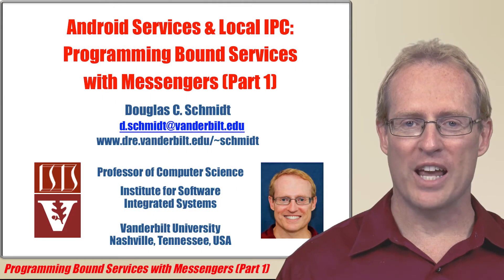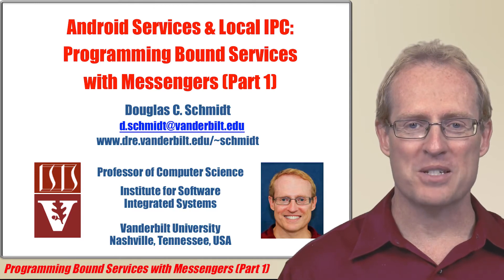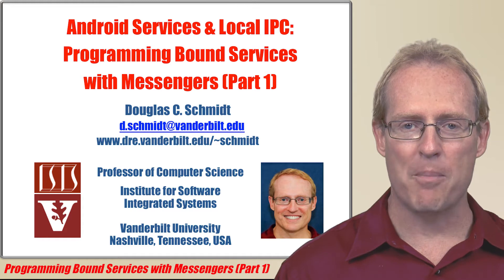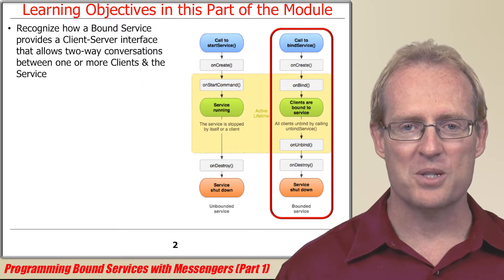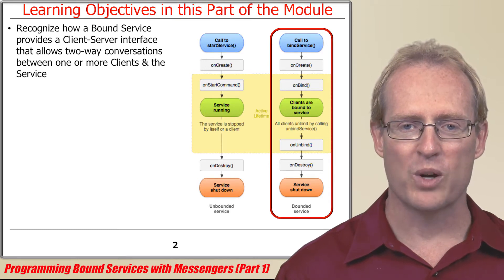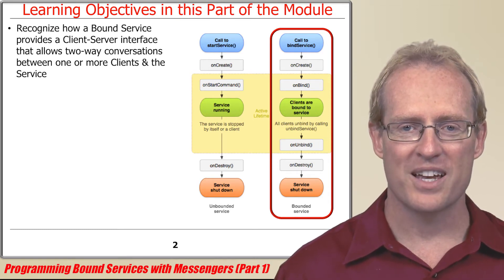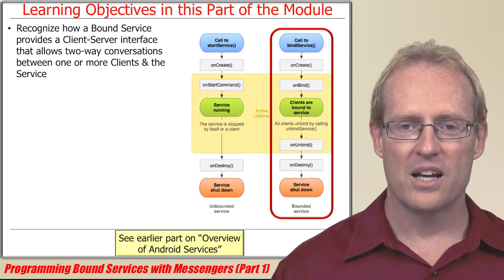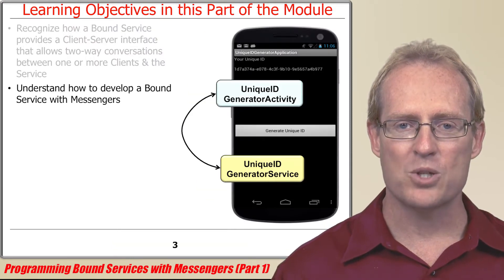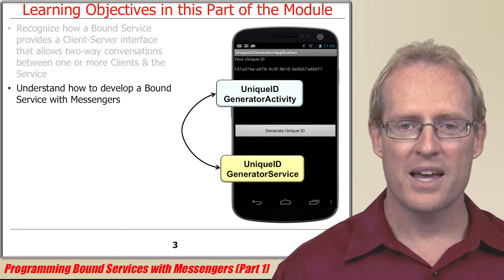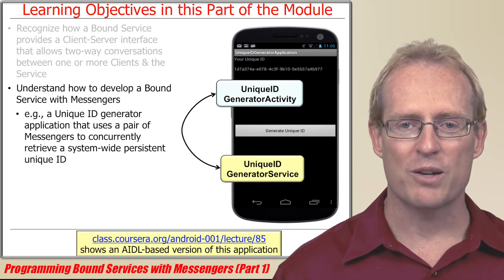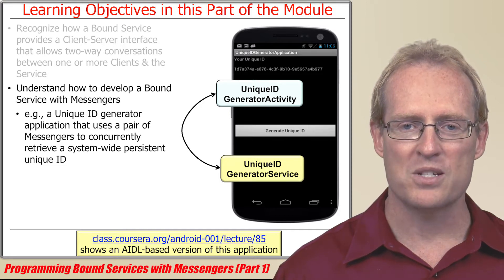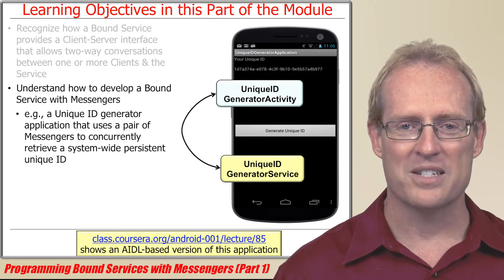Welcome to the next part of the module on Android services and local inter-process communication mechanisms, which begins our analysis of how to program a bound service. A bound service offers a client-server interface that allows extended two-way conversations between one or more clients and the service, as shown in an earlier video. To understand how to develop a bound service with a pair of messengers, this part will analyze key elements and steps in the design of an application that concurrently retrieves a system-wide persistent unique identifier and displays it to the user.